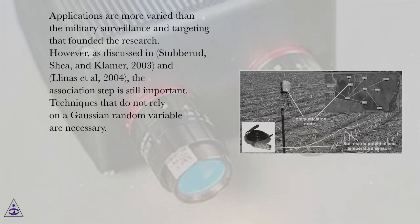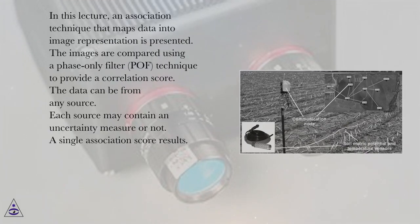Techniques that do not rely on a Gaussian random variable are necessary. In this lecture, an association technique that maps data into image representation is presented. The images are compared using a phase-only filter (POF) technique to provide a correlation score. The data can be from any source. Each source may contain an uncertainty measure or not. A single association score results.